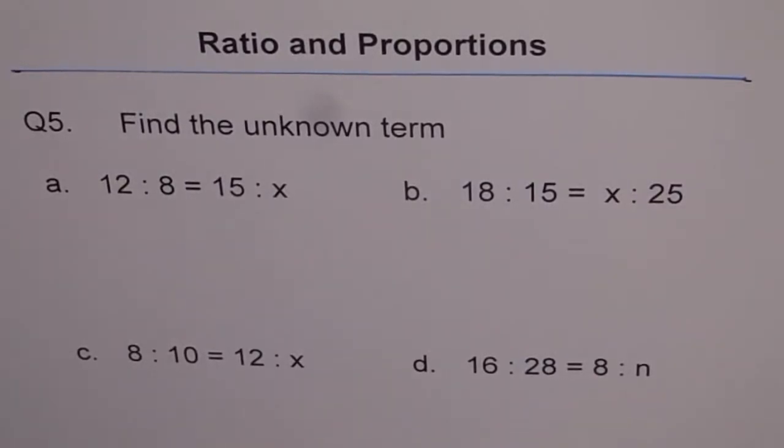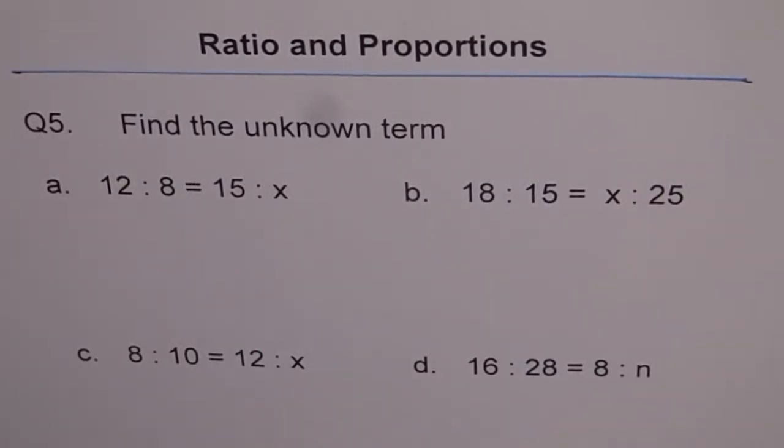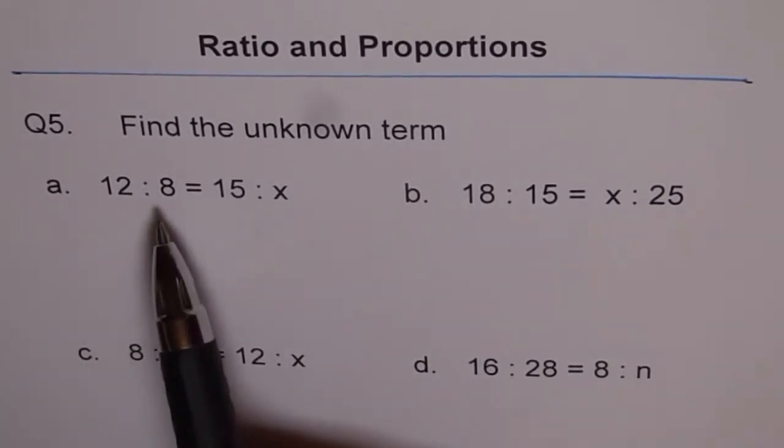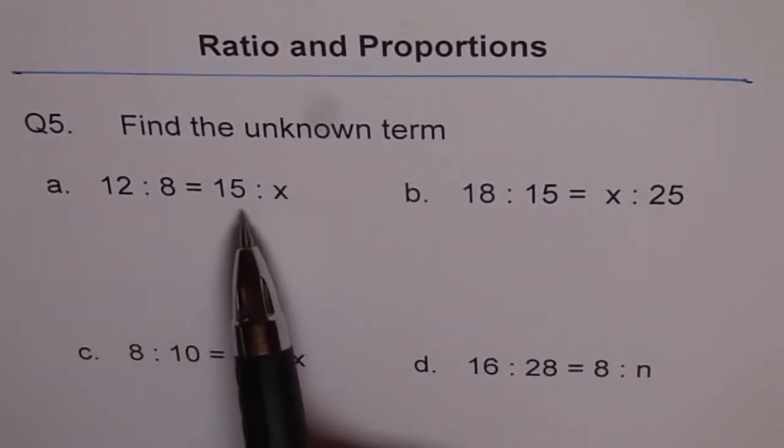Ratios and Proportions, Question 5. Find the unknown term A. 12 is to 8 equals to 15 is to X.